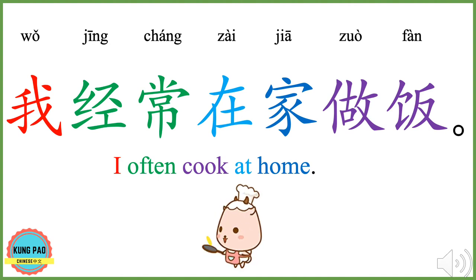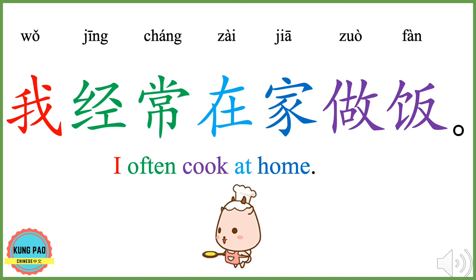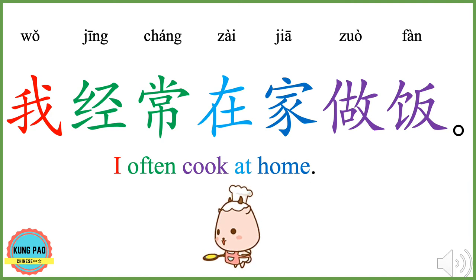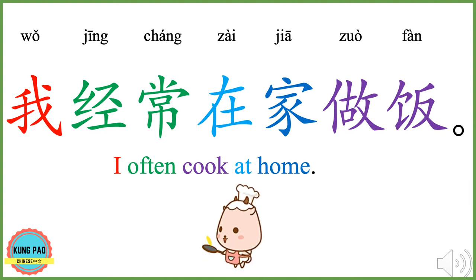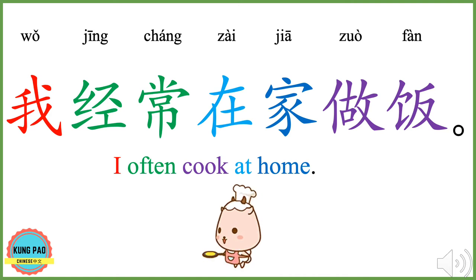我经常在家做饭。 我 means I or me. 经常 means often, usually, or frequently. 在 here means at. 家 means home. 做饭 means cook. 我经常在家做饭 means I often cook at home.